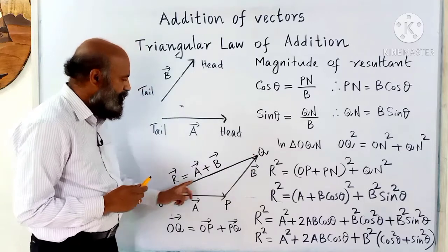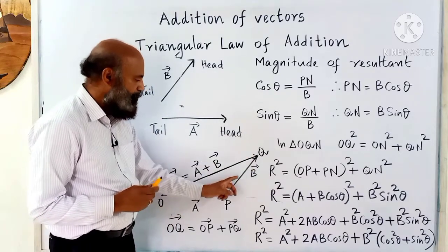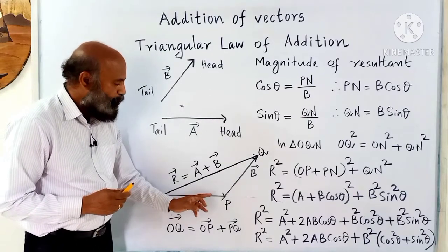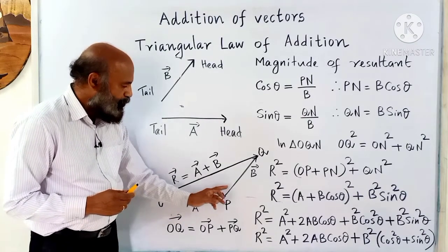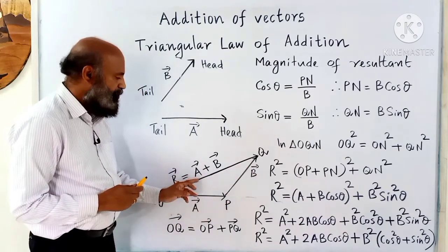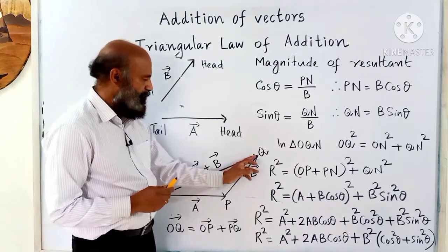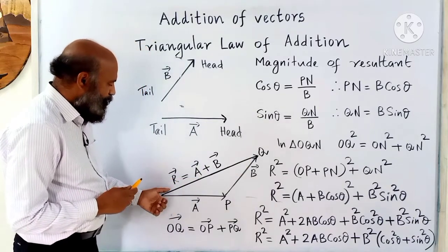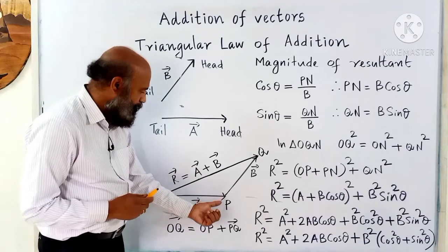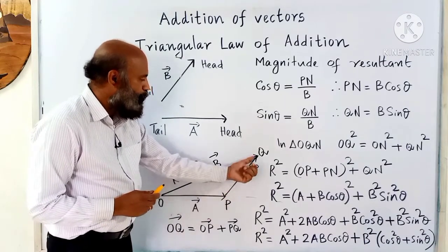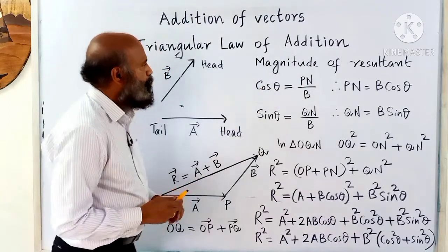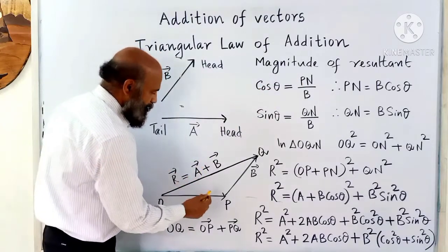Now join the tail of a and the head of b — that is the resultant of vector a and vector b. If two vectors are represented by two sides of a triangle taken in order, then the third side gives the resultant. So OQ vector equals OP vector plus PQ vector. Now we find the magnitude of the resultant.